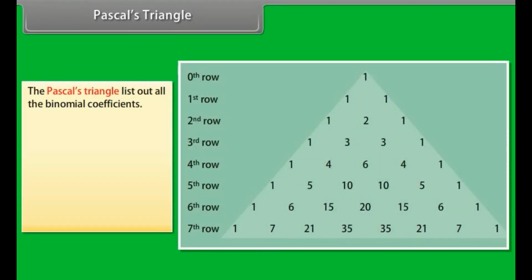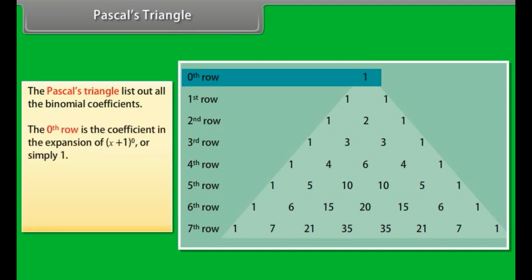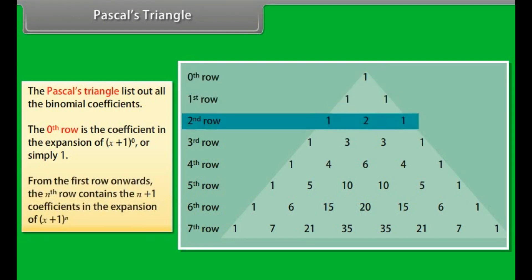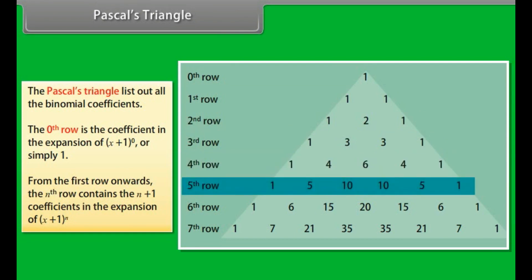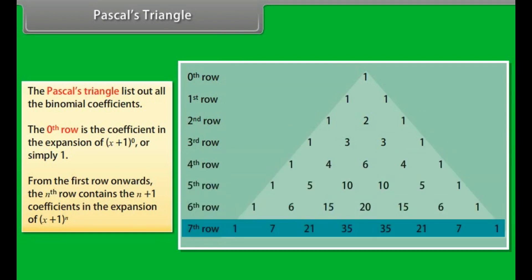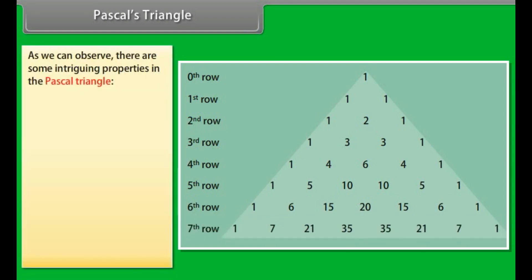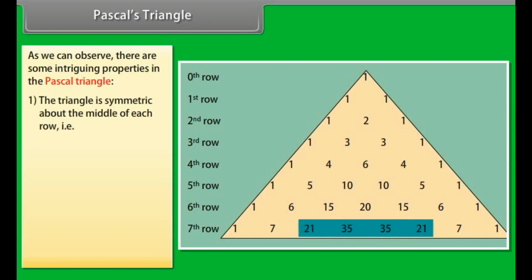Pascal's triangle lists out all the binomial coefficients as shown in the figure. The 0th row is the coefficient in the expansion of (x + 1)⁰, or simply 1. From the first row onwards, the nth row contains the n+1 coefficients in the expansion of (x + 1)ⁿ. As we can observe, there are some intriguing properties in Pascal's triangle. The triangle is symmetric about the middle of each row.